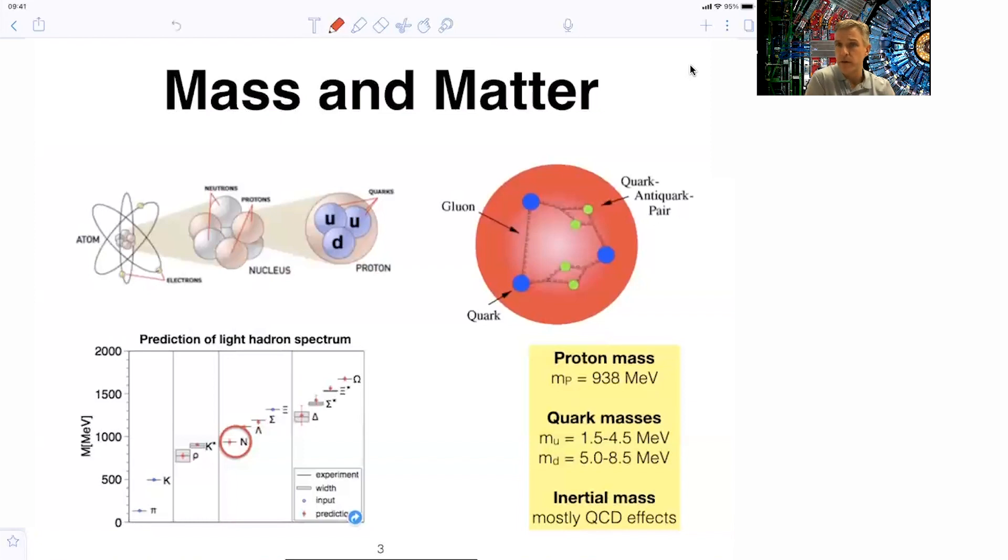This works quite well. There is a theory which describes all of this. It's called QCD, quantum chromodynamics. And with some assumptions, you can calculate the masses of a bunch of particles. This plot here shows the light hadron spectrum, which can be calculated using this QCD.